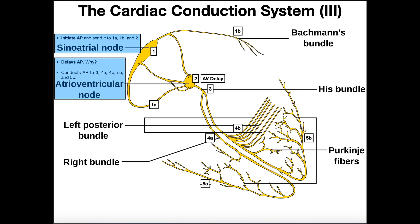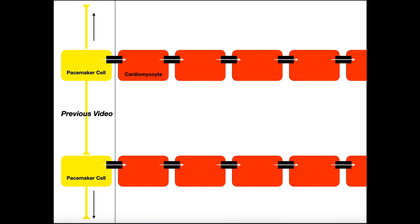The area where the action potentials are in this electrical conduction system is going to correspond with the area of the heart muscle that's contracting. That's the reason why the atria contract before the ventricles — it's because the action potentials are originally just up here. Once the action potentials spread across the His bundle, down through the bundle branches, and into the Purkinje fibers, then the ventricles will contract.